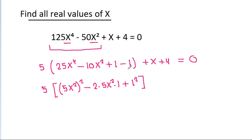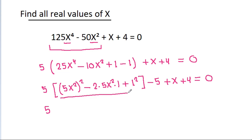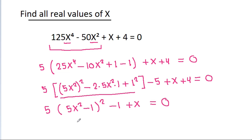And 5 times minus 10x², and 5 times minus 1 is minus 5, plus x plus 4 is equal to 0. And it is 5 times, and this is (5x² - 1 + 1)² — so (5x² - 1)² is equal to 1 - x.